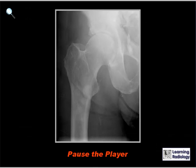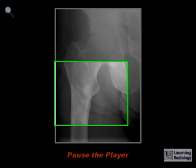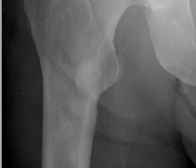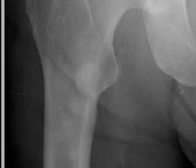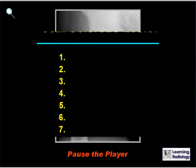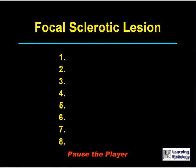This is the next differential. The differential is for focal sclerotic lesions of bone. There are eight major causes.